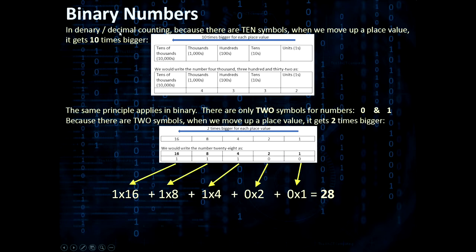Just a reminder again, when we're in normal numbers, decimal numbers, because there are ten symbols, when we move up everything gets ten times bigger. In binary when we move up there's only two symbols so they get two times bigger.